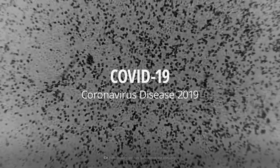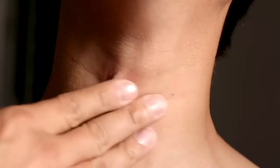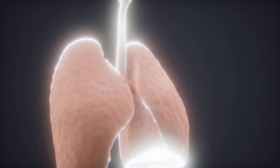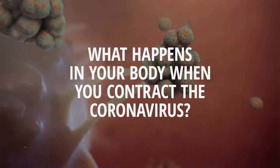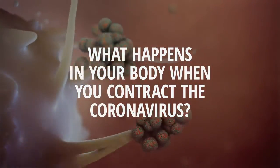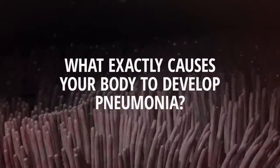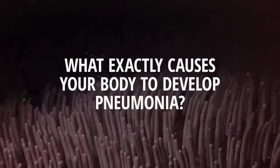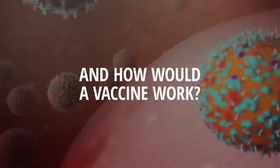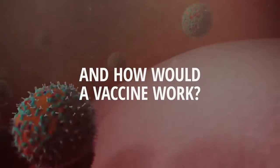SARS-CoV-2 can cause COVID-19, a contagious viral infection that attacks primarily your throat and lungs. What actually happens in your body when you contract the coronavirus? What exactly causes your body to develop pneumonia? And how would a vaccine work?